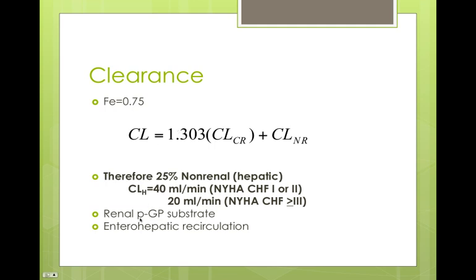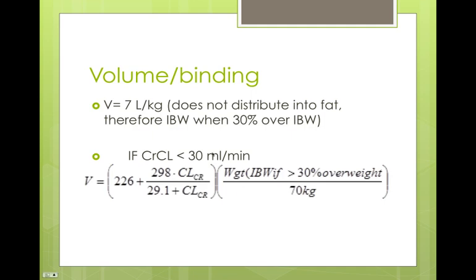It is also a P-glycoprotein substrate in the kidney, and there are probably drug interactions there that aren't described very well yet. It also undergoes enterohepatic recirculation — the drug is pumped into the bile, stored in the gallbladder, then released back into the small intestine where it can either go out in the feces or be reabsorbed into the bloodstream and go through the whole process again. We know it's primarily cleared by the kidneys, so we're going to be concerned about renal failure.